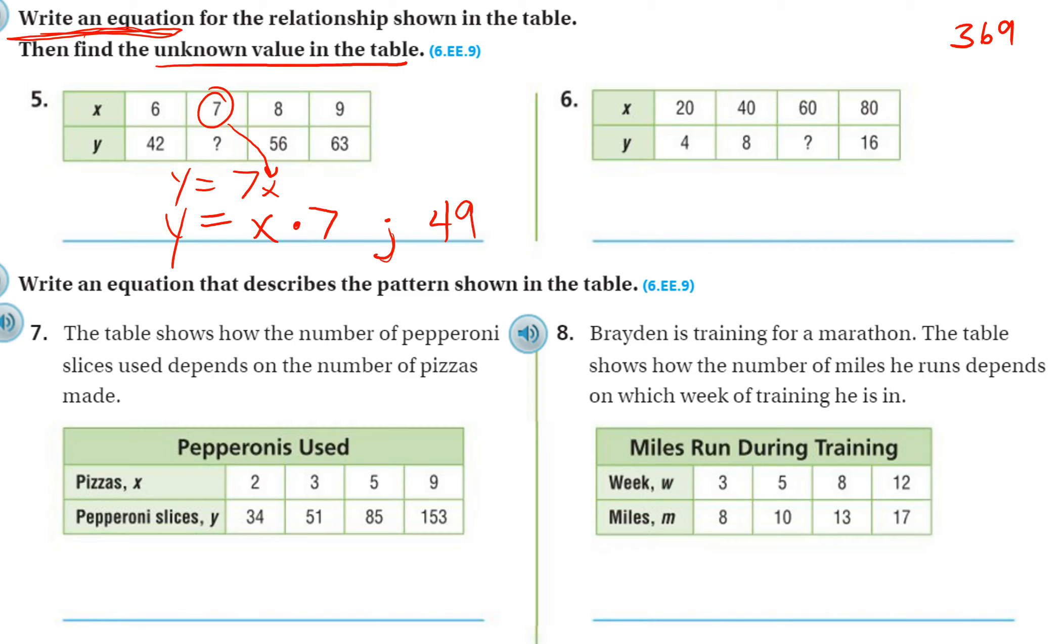Okay, let's look at number 6. So again, my output is going to be over here by itself on my equation. My input is my x. And then what are they doing to the x to get it to y? Well, it's getting smaller, so I know I'm probably going to be either dividing or subtracting. So I could subtract 16. 20 minus 16 would give me 4, but 40 minus 16 would not give me 8, and it has to work on all of them, otherwise that's not the rule.